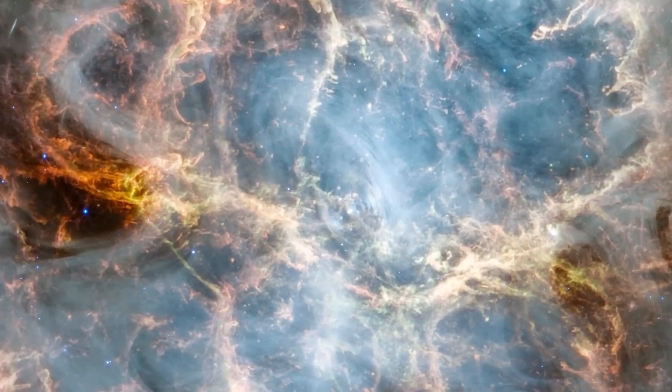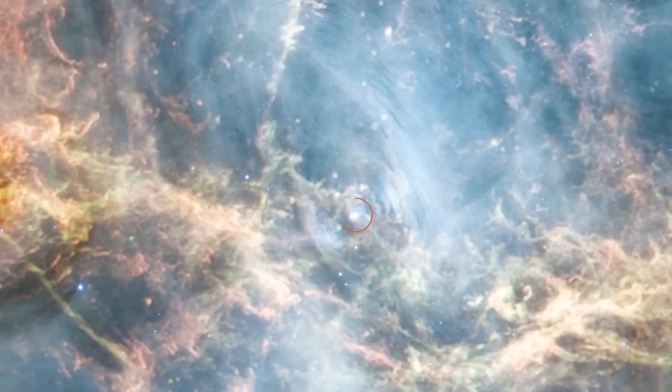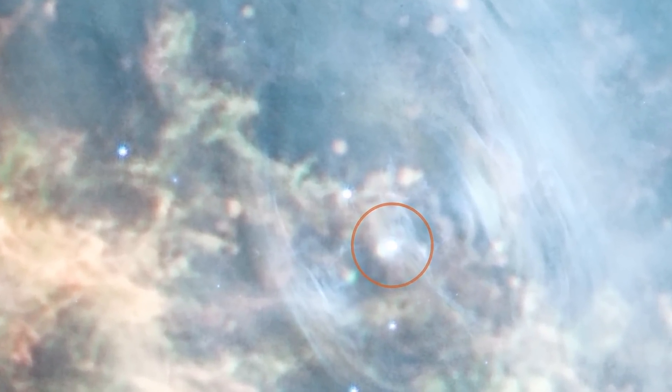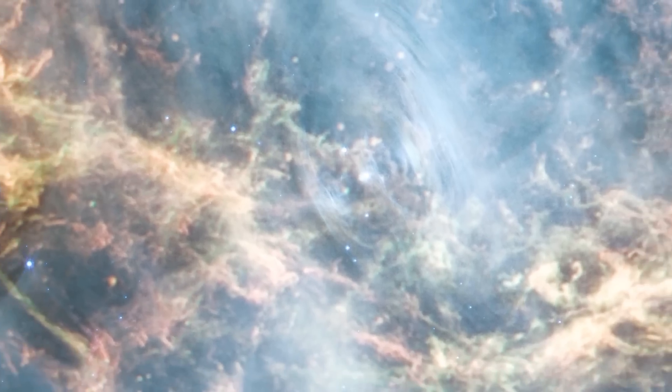In the center of it all is the Crab's pulsar, a rapidly rotating neutron star. The pulsar has an incredibly strong magnetic field and rotates very fast. It produces a wind of energetic particles that we call a pulsar wind nebula.